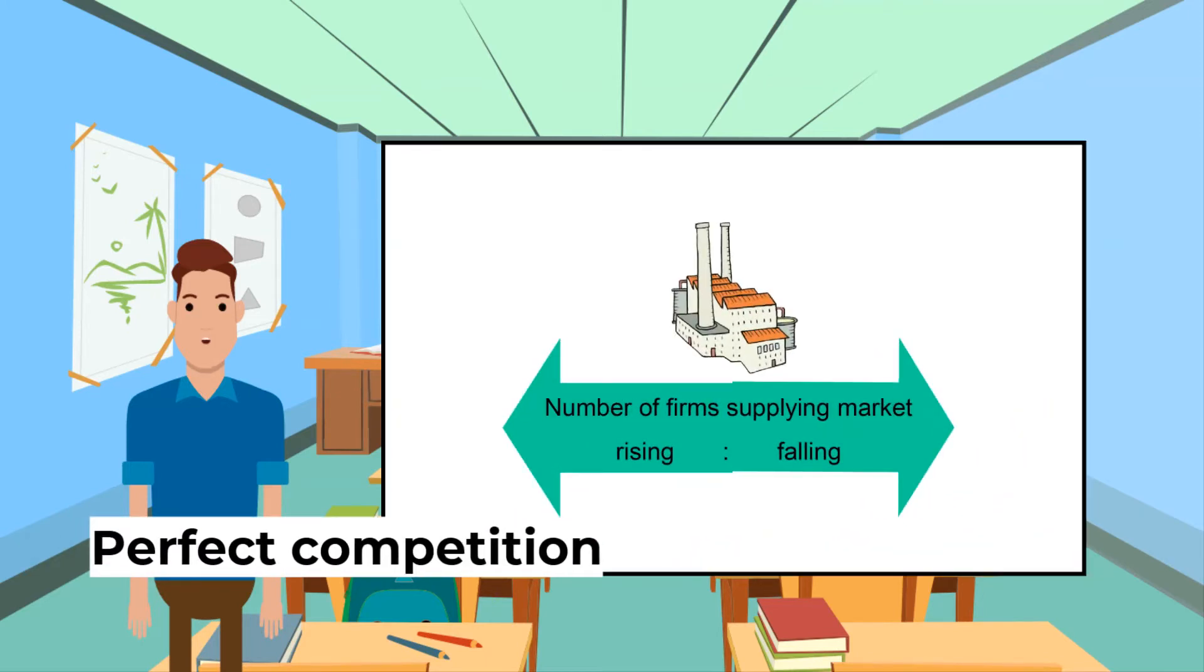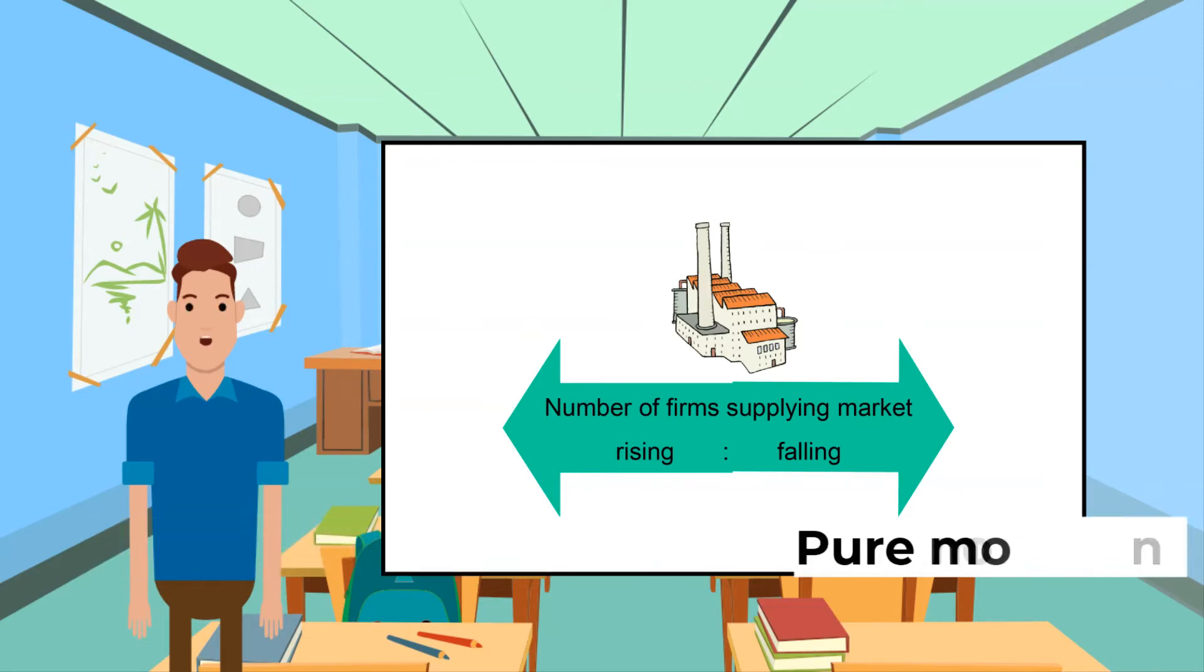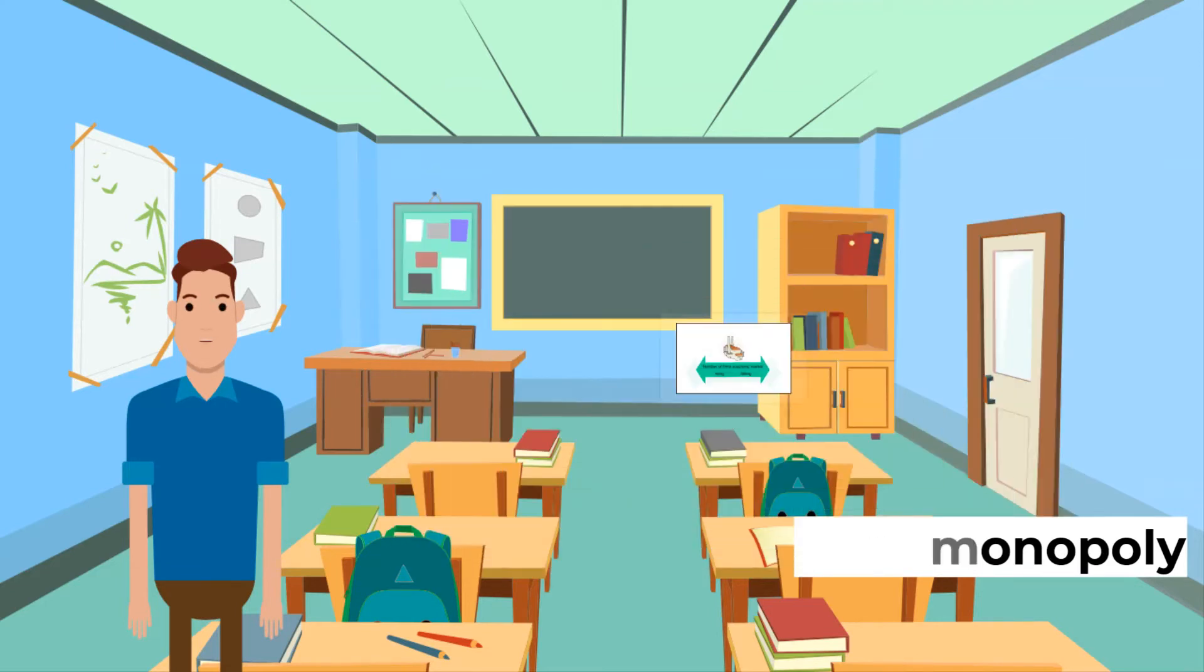With perfect competition, there are many suppliers with identical products. As a result, the individual firms have no control over market price. On the other end of the spectrum, there is a pure monopoly, where there is a single large supplier. Because of this, the monopoly firm can determine market price. There are gradations in between.